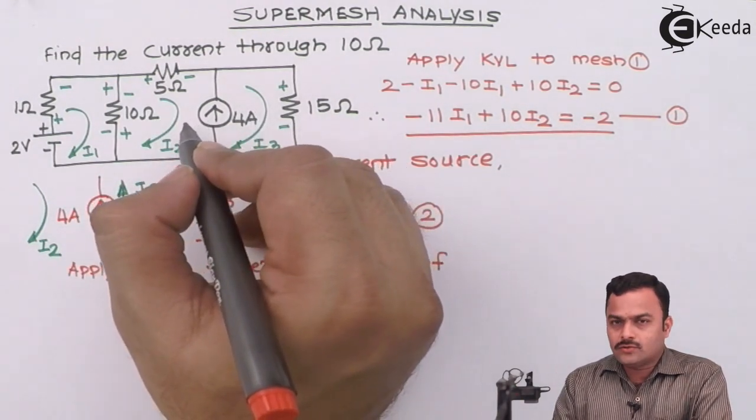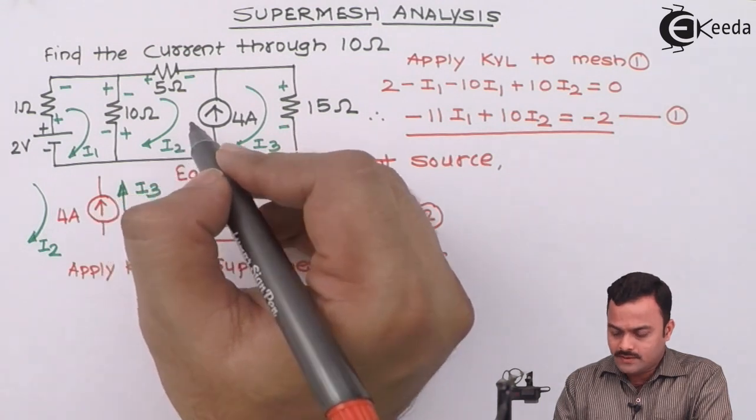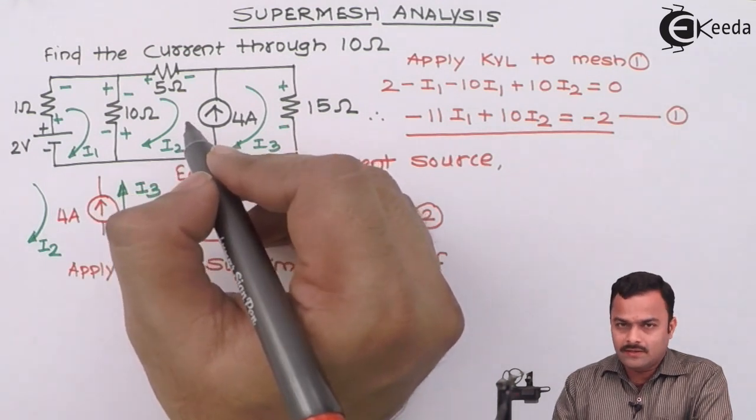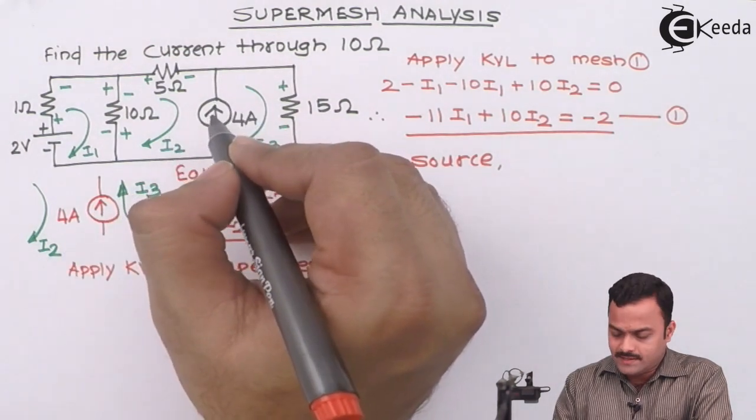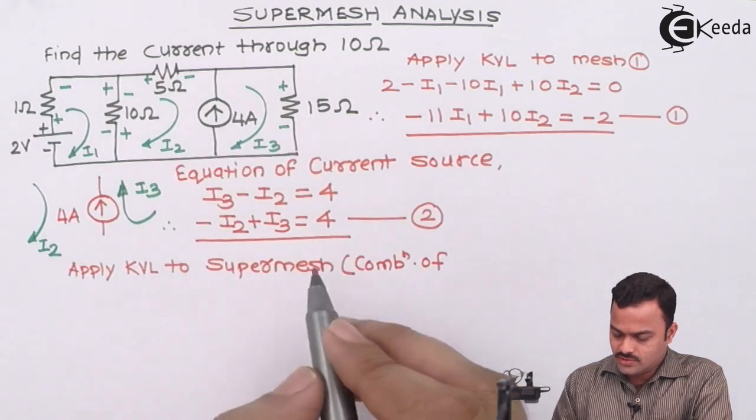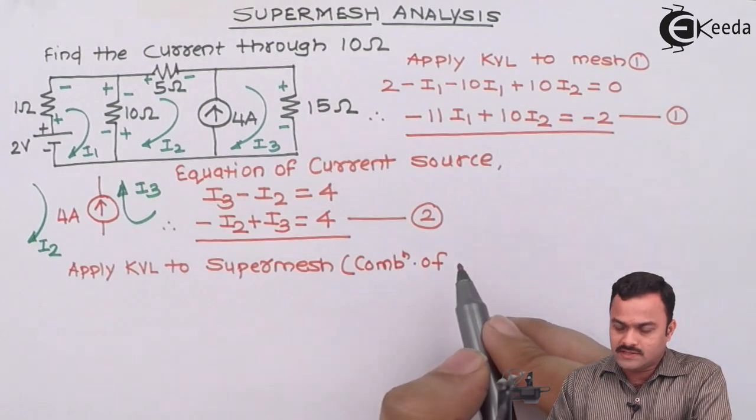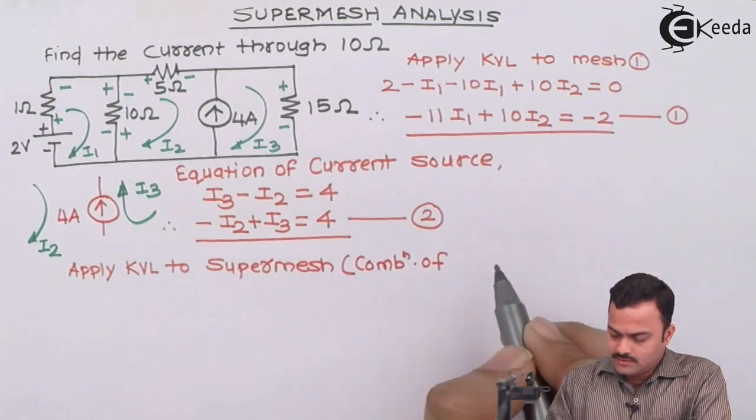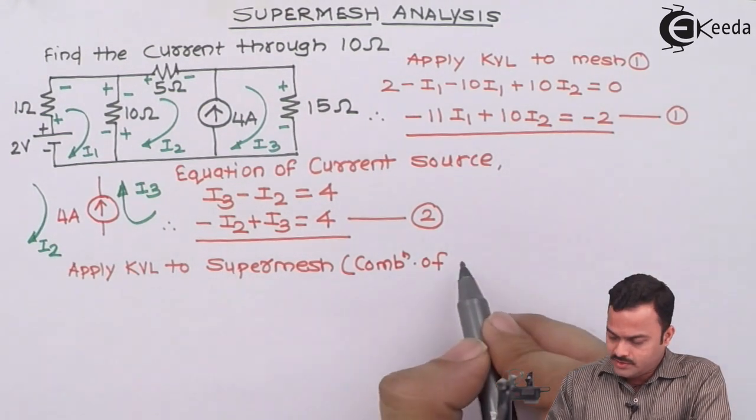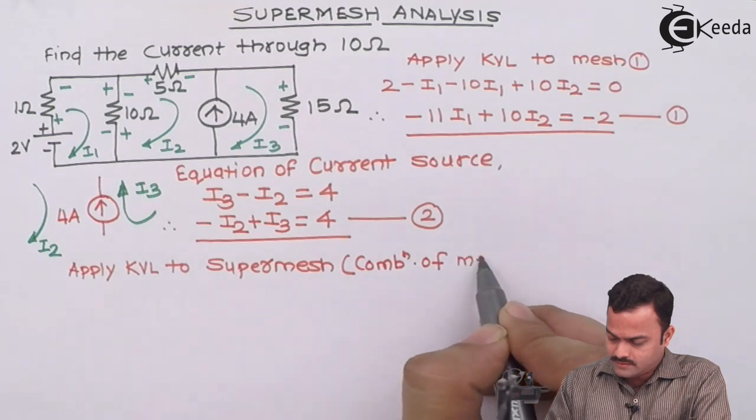How to identify which two meshes will take part in the super mesh? It is quite simple. The current source is sharing between these two meshes. Hence, super mesh is also formed by taking a combination of those two meshes. So over here, super mesh is nothing but a combination of mesh 2 and mesh 3.